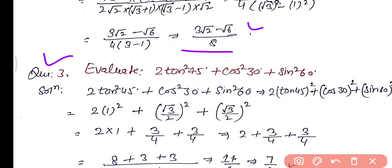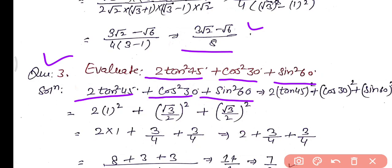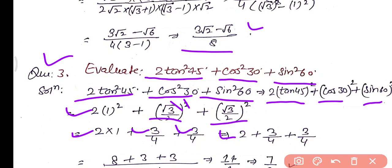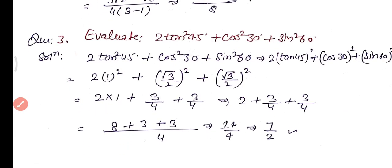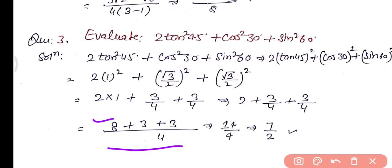Question 3: Evaluate 2 tan² 45 plus cos² 30 plus sin² 60 degree. This can be written as 2 times (tan 45)² plus (cos 30)² plus (sin 60)². Tan 45 is 1, so 2 into 1 squared is 2. Cos 30 is root 3 by 2, so squared gives 3 by 4. Sin 60 is root 3 by 2, so squared also gives 3 by 4. Taking LCM as 4: numerator becomes 8 plus 3 plus 3 equals 14, giving 14 by 4, which simplifies to 7 by 2.